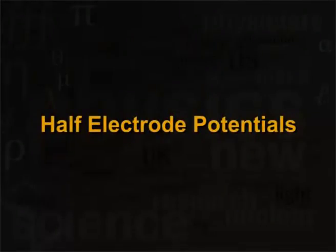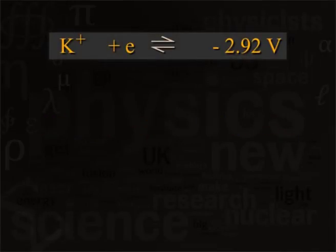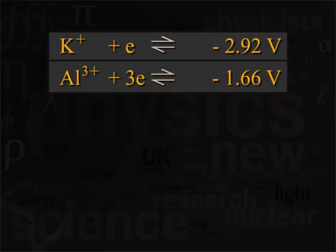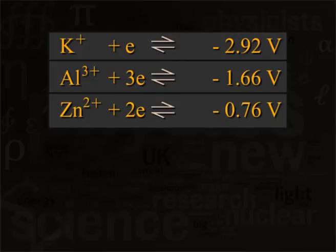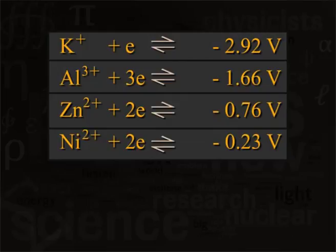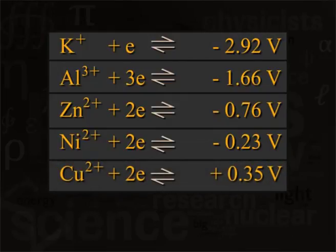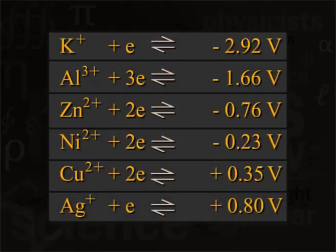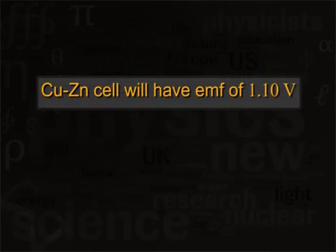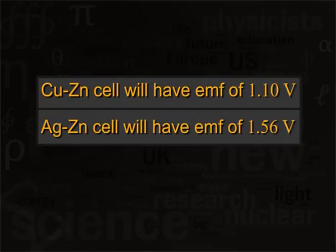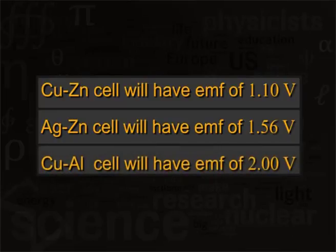As the cell operates, the reactants are used up and this may cause the EMF to decrease. We can see some typical half electrode potentials: potassium has −2.92 V, aluminium has −1.66 V, zinc has −0.76 V, nickel has −0.23 V, copper has +0.35 V, and silver has +0.35 V. Thus, a typical copper-zinc cell will have an EMF of 1.10 V, a silver-zinc cell will have an EMF of 1.56 V, and a copper-aluminium cell will give an EMF of 2.00 V.